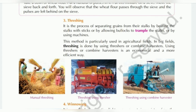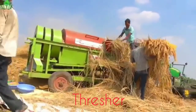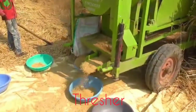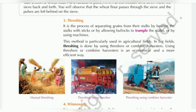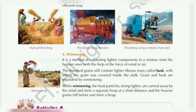This kind of method is known as threshing. Manual threshing means farmers do it by hand, beating stalks on a wooden piece. But now we have combine harvesters — equipment that does the whole job. Threshing is the process of separating grains from the stalks by beating them on a wooden piece.